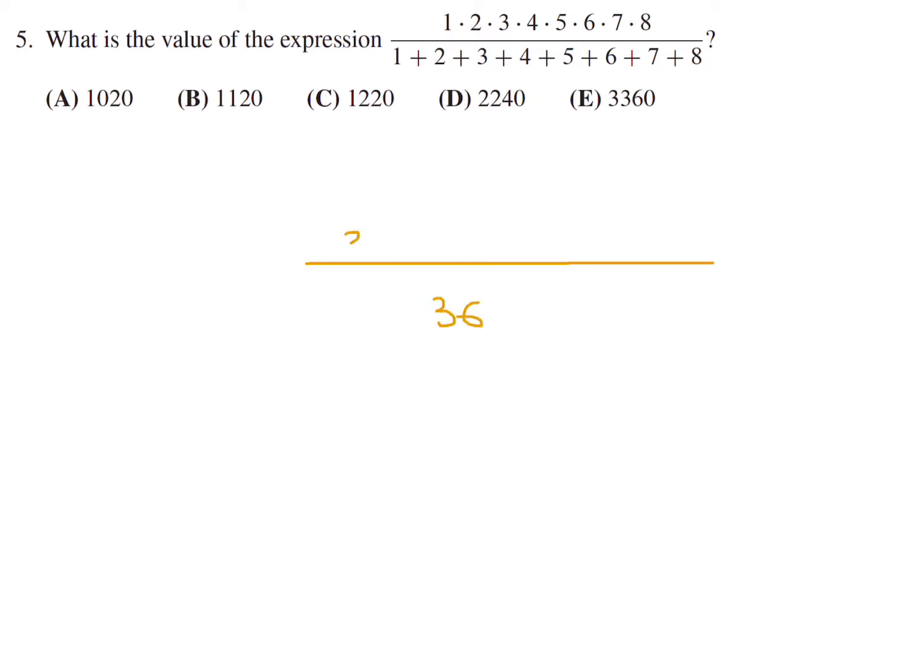And on the top you've got 2 times 3 times 4 times 5 times 6 times 7 times 8, like that. And 36 is the same as 2 times 3 times 6, so those cancel.